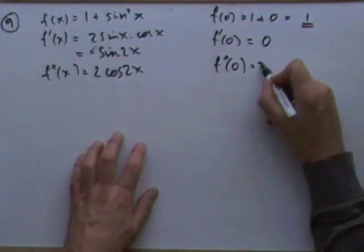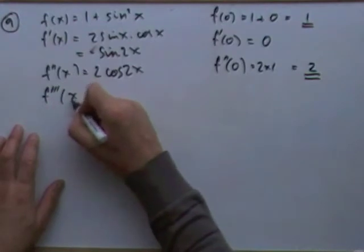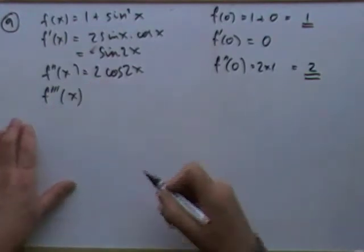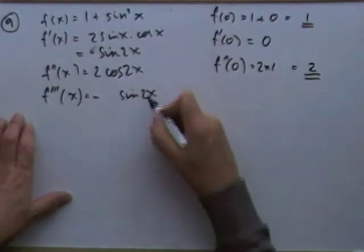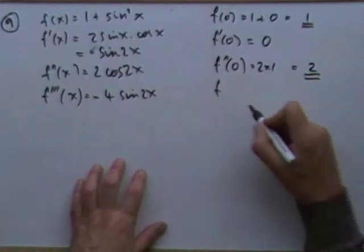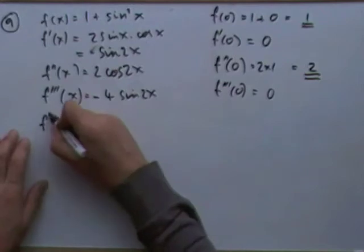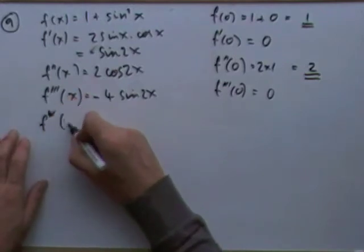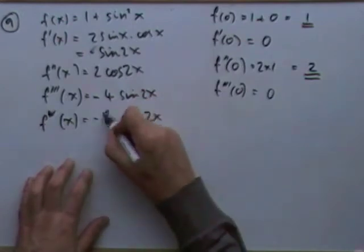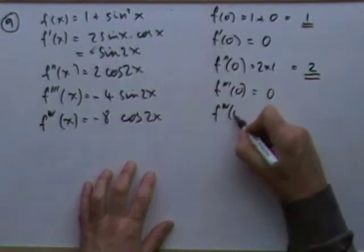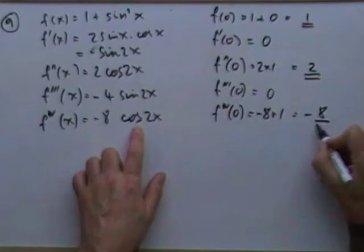Continuing, since sin and cos keep rotating: the third derivative is -4 sin 2x, giving value 0 at zero. So I go to the fourth derivative: -4 sin 2x differentiates to -8 cos 2x, giving a value of -8 at zero. Now I have all the values I need.